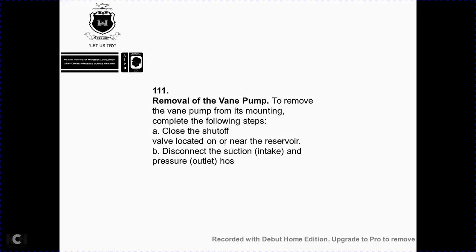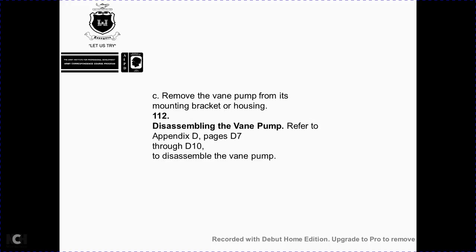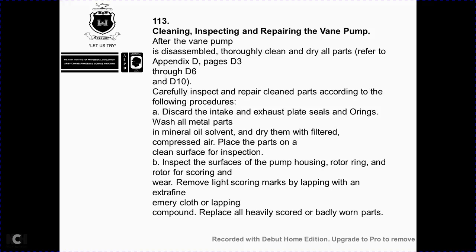Removal of the vane pump. Complete the following steps: close the shutoff valve located near the reservoir, disconnect the suction intake and pressure outlet hoses, then remove the vane pump from the mounting bracket housing. Disassemble the vane pump — refer to Appendix D, pages D7 through D10. Cleaning, inspection, and repair of the vane pump: after disassembly, clean and dry all parts. Carefully inspect the cleaned parts. Discard intake and exhaust seals and O-rings. Wash all metal parts in mineral oil and allow to dry. Inspect surfaces of the pump housing and rotary ring for scoring and wear. Remove light scoring by lapping parts with extra-fine lapping compound; replace heavily scored or badly worn parts.